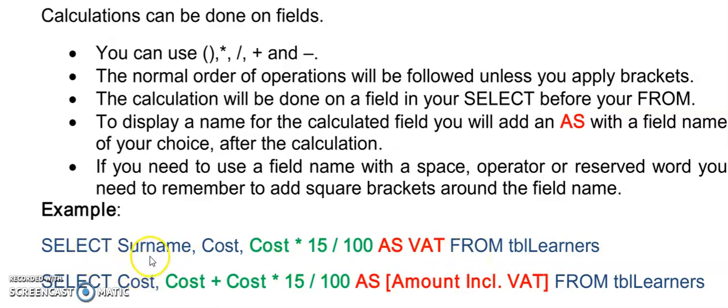Here is an example of listing the surname and cost, but then calculating the VAT. I'm using the value inside of cost and multiplying that by fifteen percent, and then after the calculation putting AS VAT. What you place after the AS is what you will see as the heading at the top of this column.